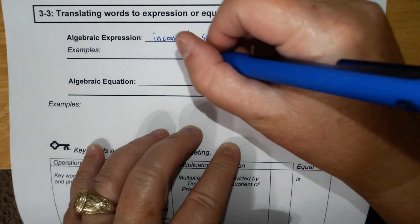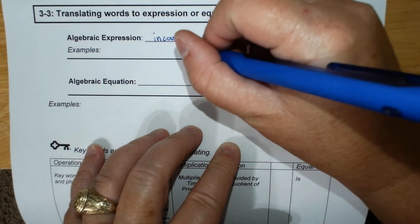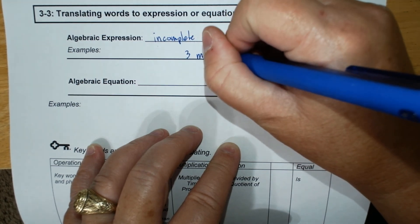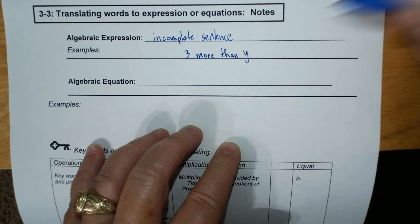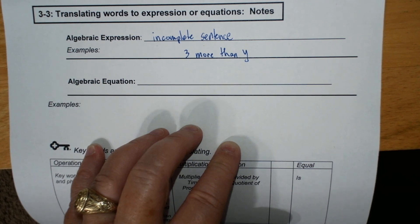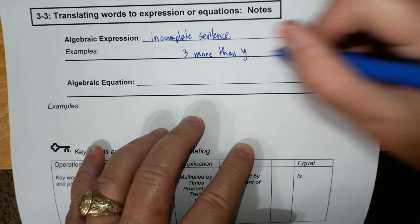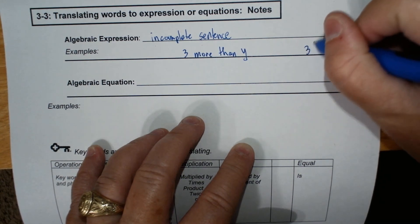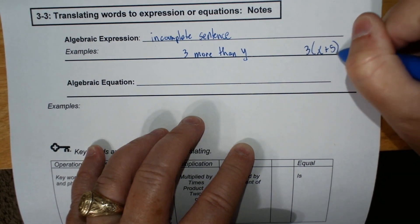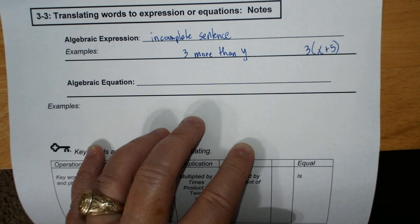So when I say 3 more than y, that is an algebraic expression, and that's in words. And if I do 3 times x plus 5, that is an expression. Those are examples of expressions.